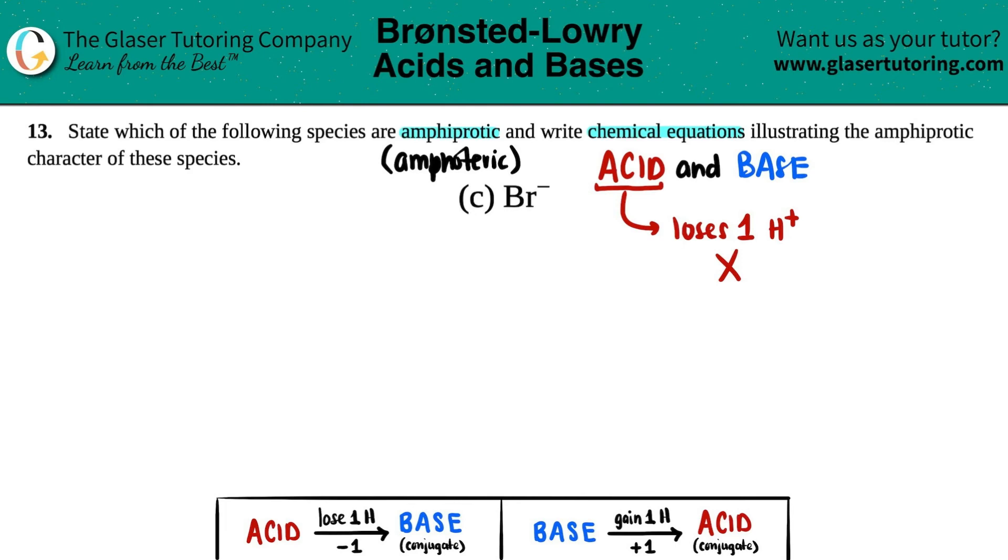Actually, not never, two negatives, I guess that would be always. So just never. Anyway, in this case, since Br minus cannot act as an acid, this is not amphiprotic and we don't have to do anything else.